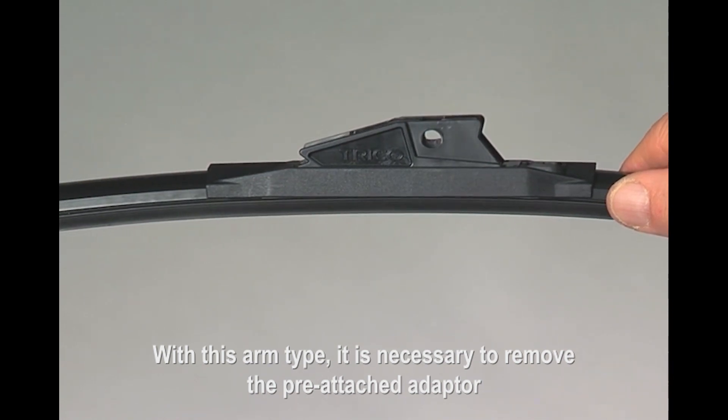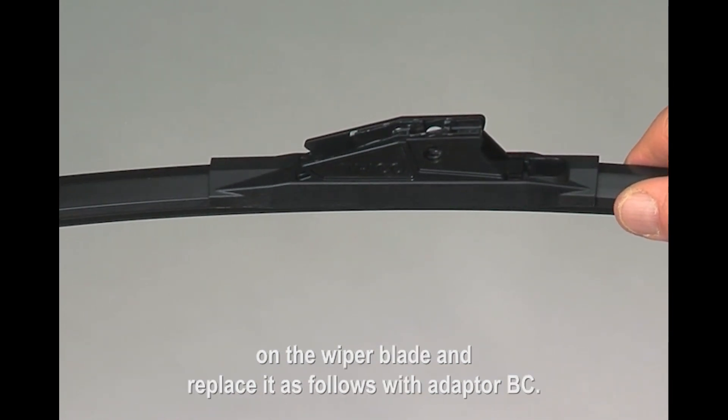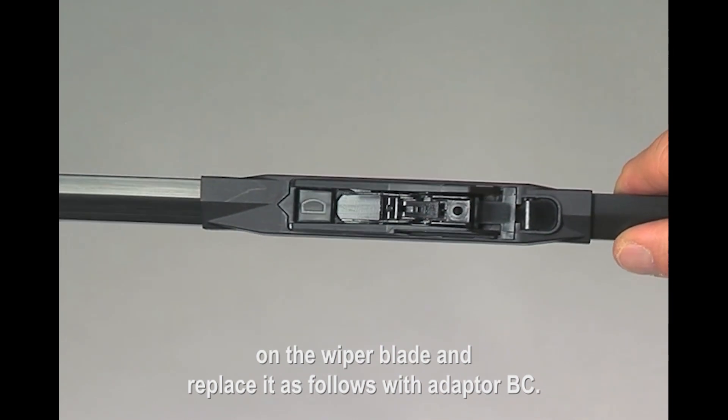With this arm type, it is necessary to remove the pre-attached adapter on the wiper blade and replace it as follows with adapter BC.